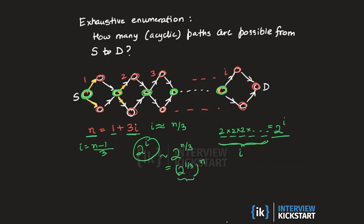And this in turn can be written as the cube root of 2 raised to the power N. Now the cube root of 2 is a number that is more than 1. It lies between 1 and 2. And so whatever this number is, it is clearly exponential in N. If we try to follow this approach of enumerating all the different acyclical paths from S to D, we are going to end up enumerating an exponential number of paths. Basically we get a combinatorial explosion if we follow this naive exhaustive enumeration approach.